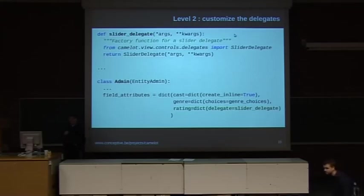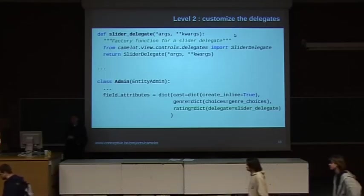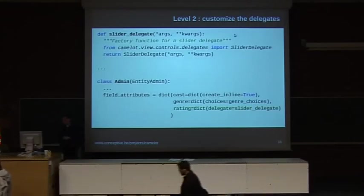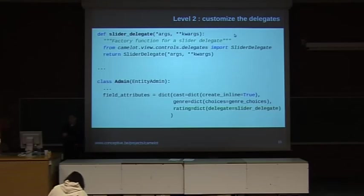So in Camelot you can specify which delegate should be used for which field. This is done again with the field attributes attribute. So you tell it there to use a particular delegate for a particular field, and you do that by specifying a factory function that creates the delegate. This factory function will then be called by Camelot to create a delegate.